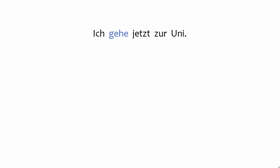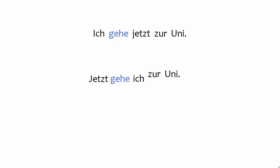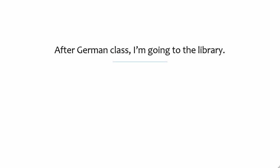Take a look at the sentence on your screen. If I start the sentence with jetzt, rather than with the subject ich, the conjugated verb is still the second element. This word order sounds odd to native speakers of English, because we're used to the conjugated verb coming after the subject. That leads us to make the common mistake of putting the verb right after the subject, even if the subject isn't the first element.